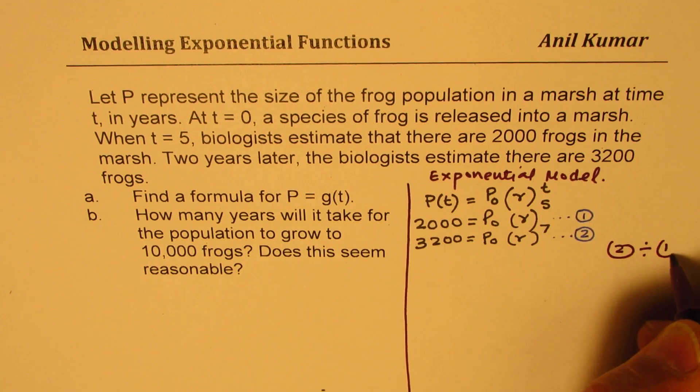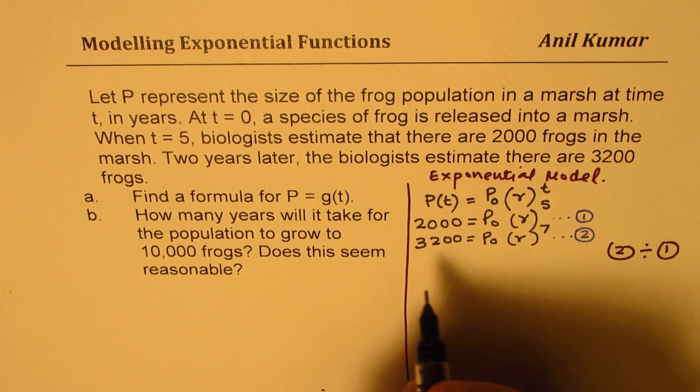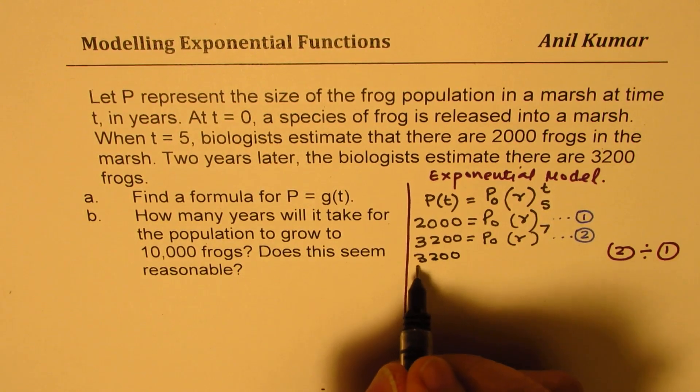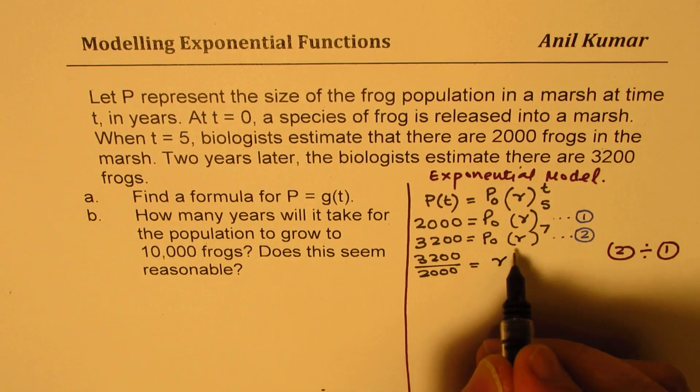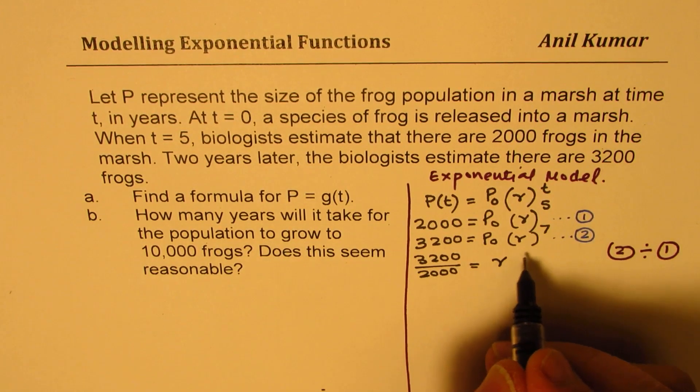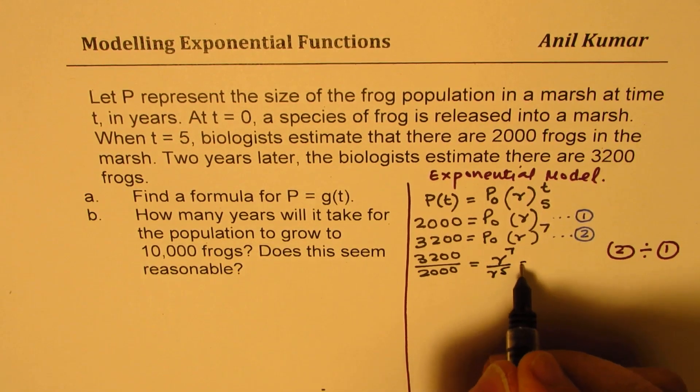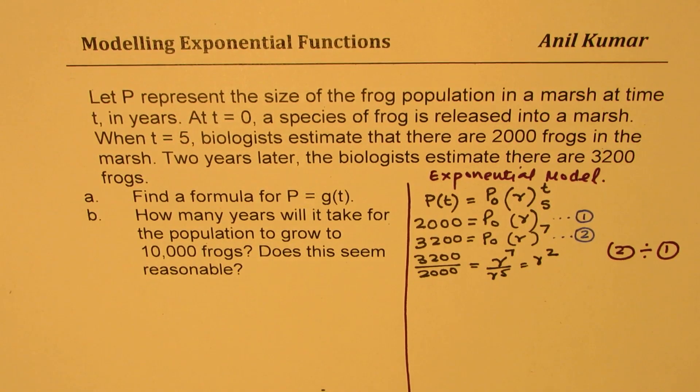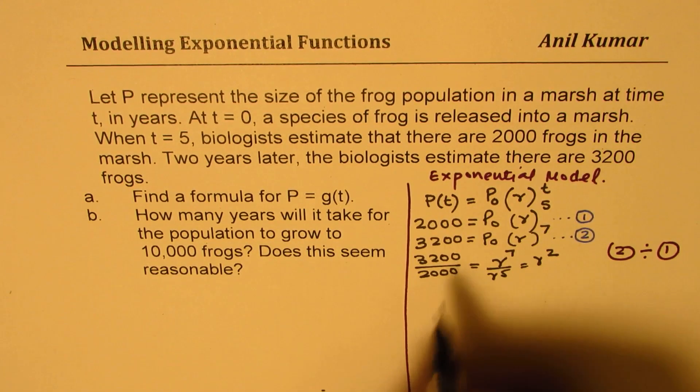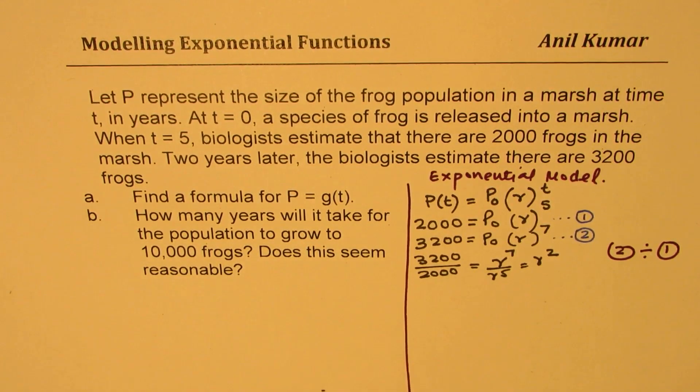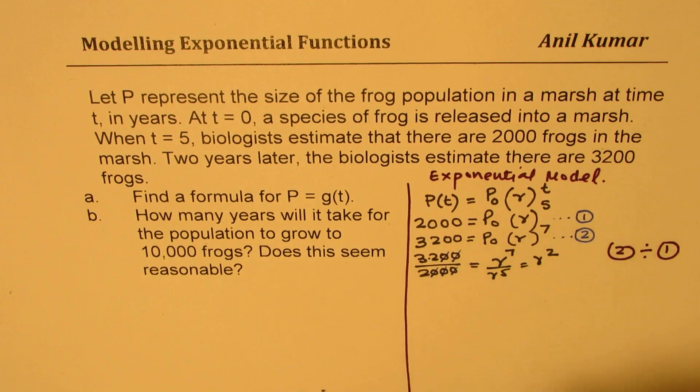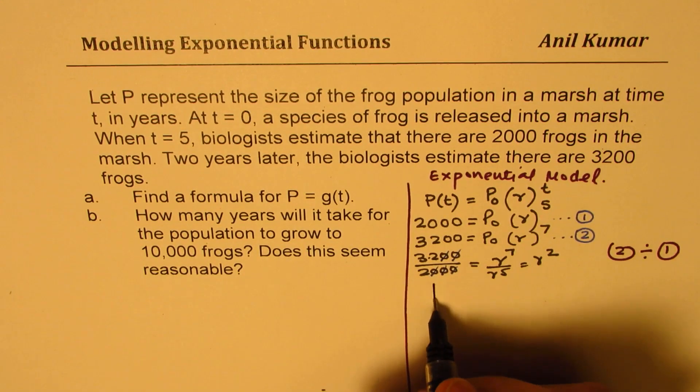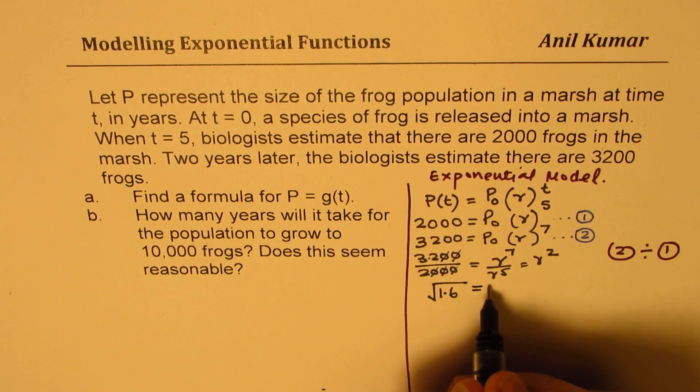So equation 2 divided by equation 1, we get 3,200 divided by 2,000 equals to P and P cancel, r to the power of 7 minus 5. Let's write r to the power of 7 over r to the power of 5, which is r squared, right? So from here, we get the value of r. Now, this is when you cancel. So it is 1.6, right? So square root of 1.6 is equal to r.